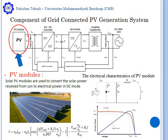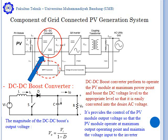The PV model, as shown in this figure, is used to convert solar power from the sun to electrical power in DC mode. The DC-DC boost converter is used to operate the PV modules at the maximum power point and boost the DC voltage level to the required level so that it is easy to convert into the desired AC voltage.